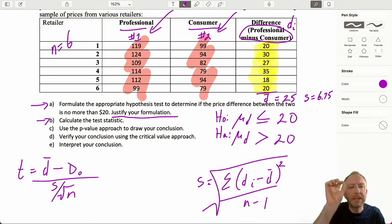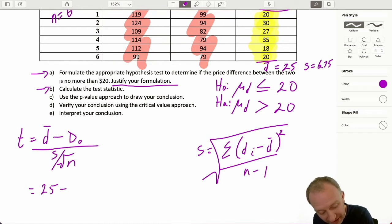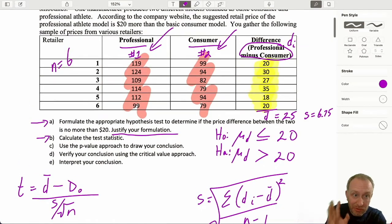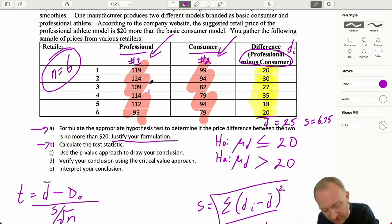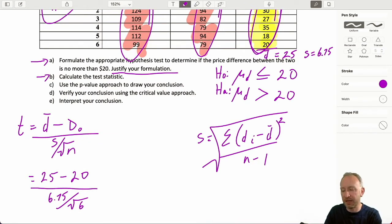You should be able to do that. Make sure, press pause on here, and make sure that you can go through those calculations and get that same number. If not, I'm sure I'll hear about it in the comment section. Now we have our average difference. We have our hypothesized difference now is not zero, now it's 20, divided by that standard error, 6.75, divided by the square root of the sample size. And again, don't lose track of the fact that our sample size here is 6. It's not 6 plus 6. Our sample size is just those difference values. It's just 6. Let's go through this. This is going to be 25 minus 20 divided by 6.75 over square root of 6. So, that gives me a value of 1.81 as my test statistic.